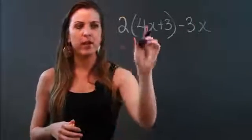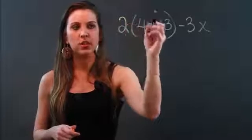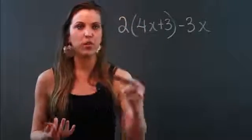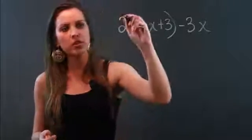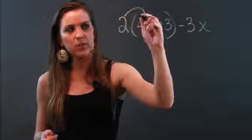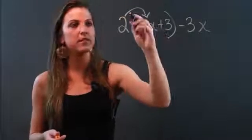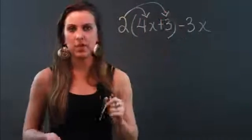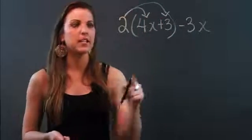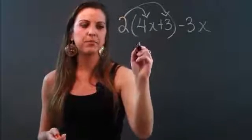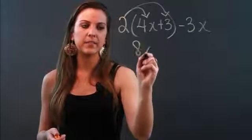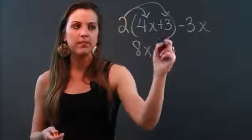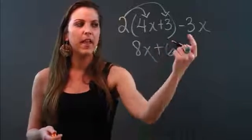Whenever you see a number before parentheses, it means to distribute. I'm going to distribute this 2 to the 4x — my first term inside the parentheses — and to the 3, the second term inside the parentheses. So 2 times 4x is 8x, and 2 times positive 3 is positive 6.